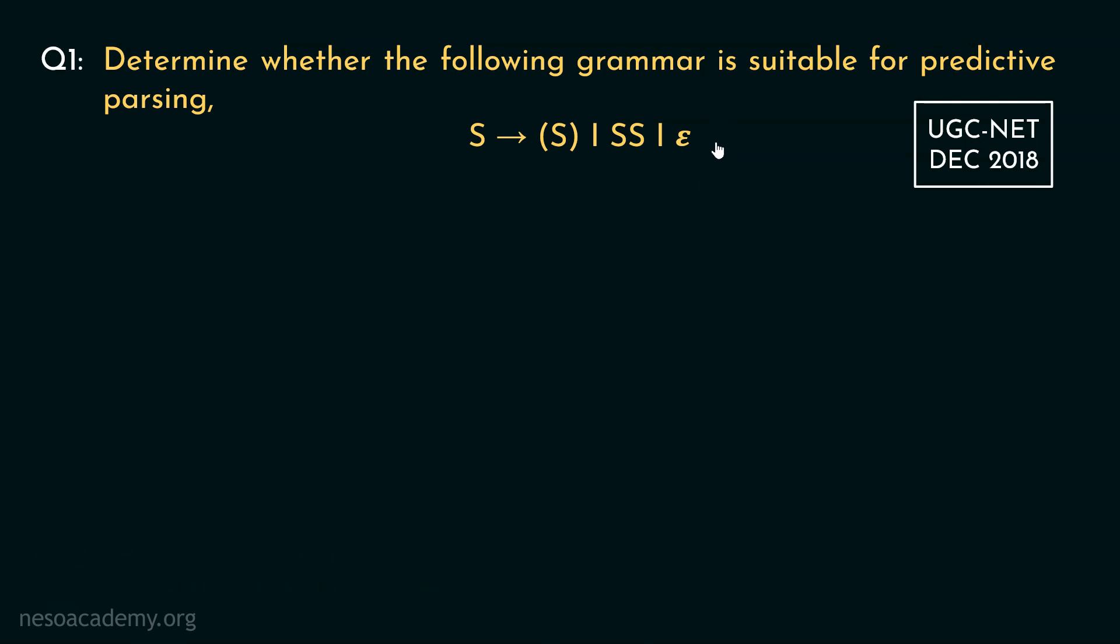Well, this one's clearly a CFG as the left-hand side has only one non-terminal, that is S. By the way, predictive parser is the recursive descent parser and we will learn about it in details in the next chapter. However, we still can answer this.